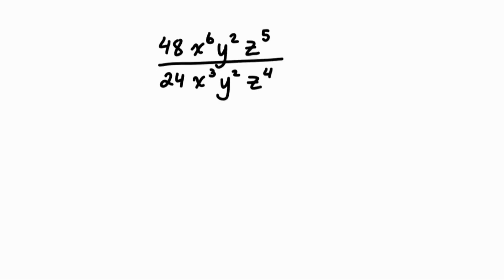Let's simplify the following rational expression. We have an expression in the numerator and in the denominator. We need to divide the coefficients, 48 and 24.